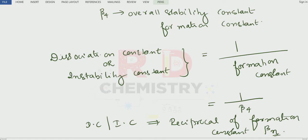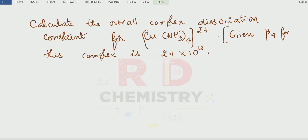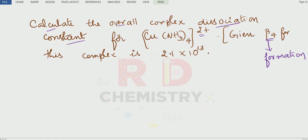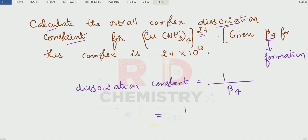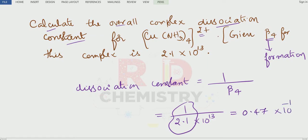Now based on this, we will solve one simple problem from the NCERT textbook. Calculate the overall dissociation constant for the complex [Cu(NH3)4]²⁺. Beta4 for this complex is given as 2.1 × 10¹³. Beta4 stands for the formation constant or stability constant, and we are supposed to calculate the dissociation constant. Since dissociation and formation constants are reciprocals of each other, dissociation constant equals 1 divided by 2.1 × 10¹³, which equals approximately 0.47 × 10⁻¹³, or 4.7 × 10⁻¹⁴.